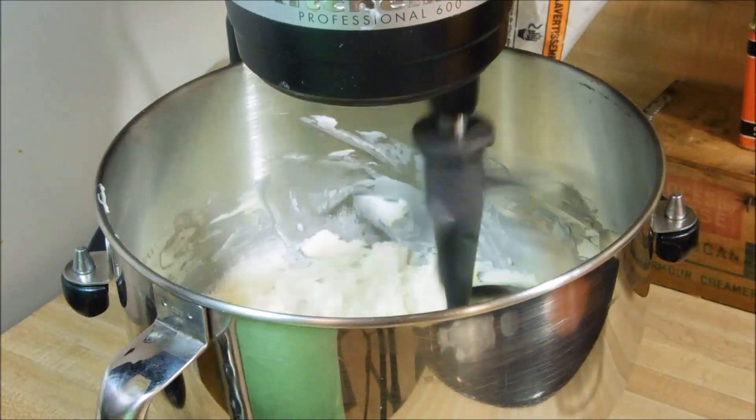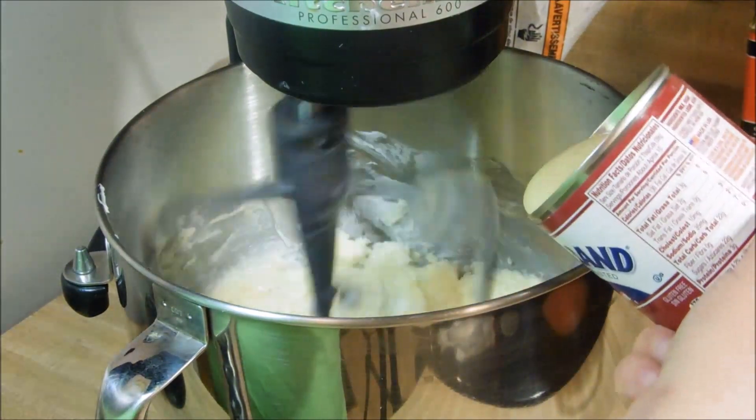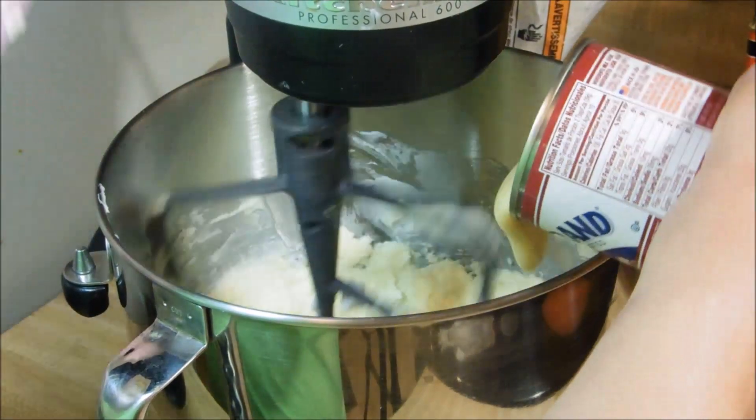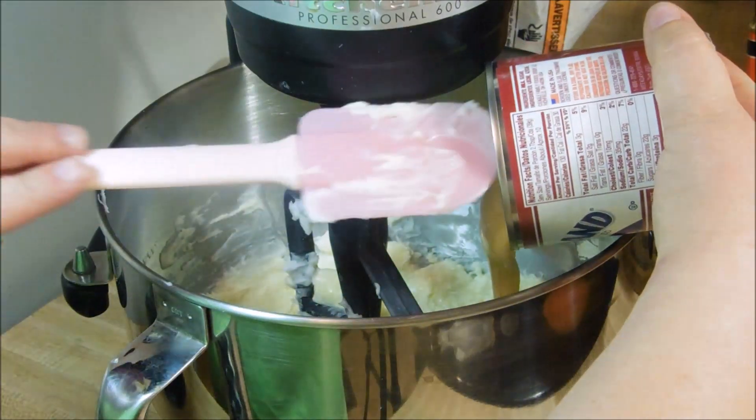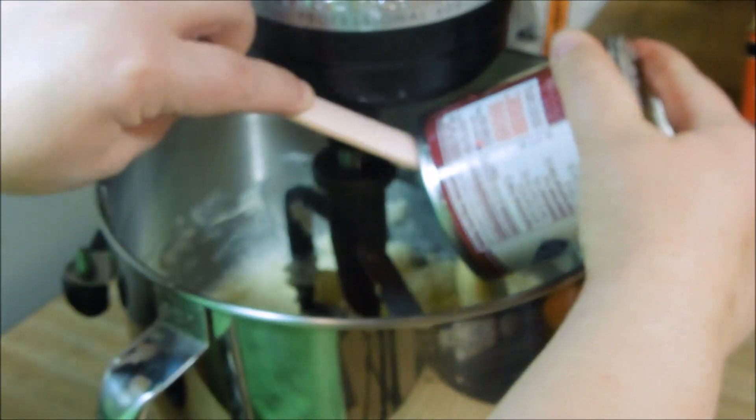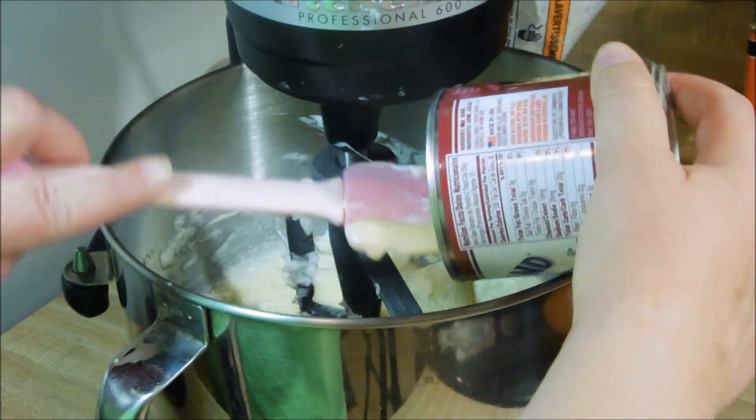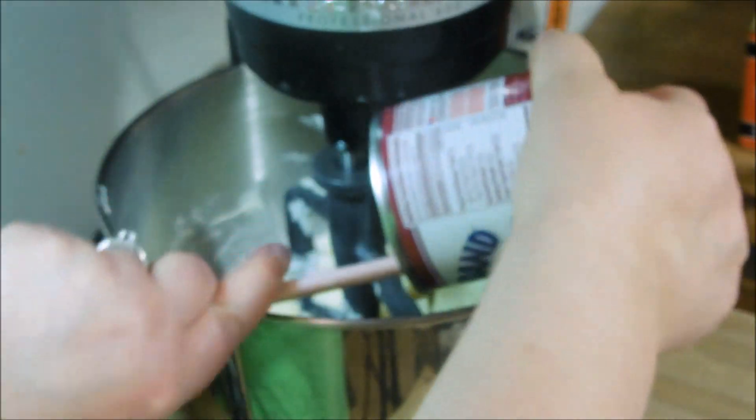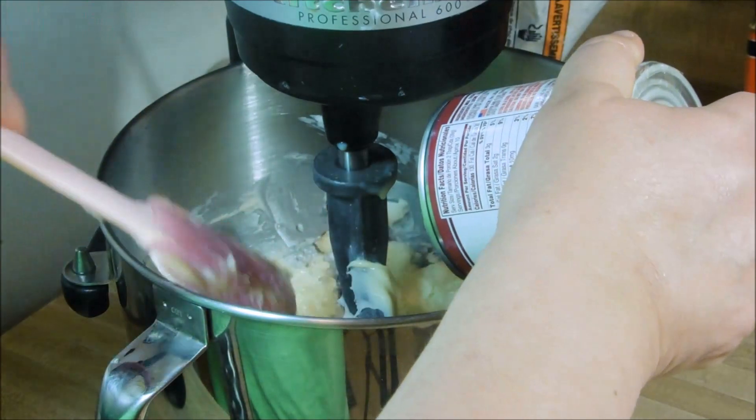Next, you are going to add one can of sweetened condensed milk that has been chilled. Mine was in the refrigerator overnight. Yours just needs to be in there long enough to get chilled, because I promise you, if you do not chill it, this will not work.